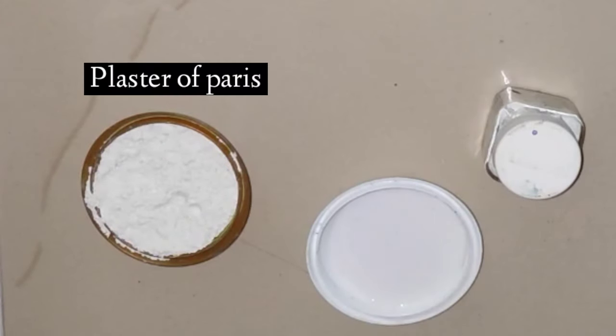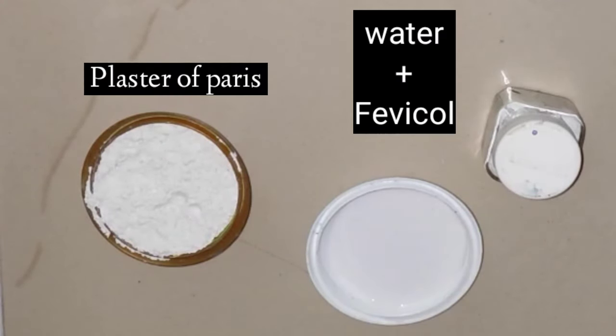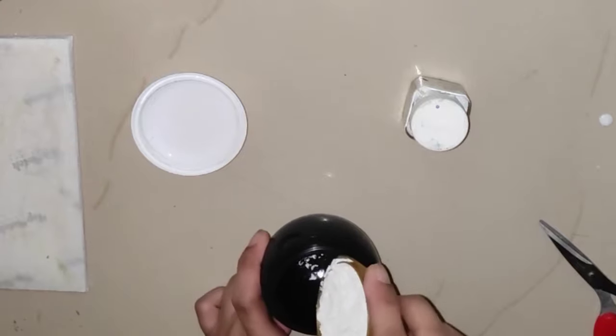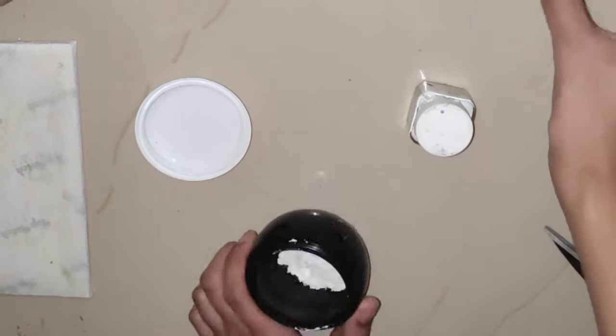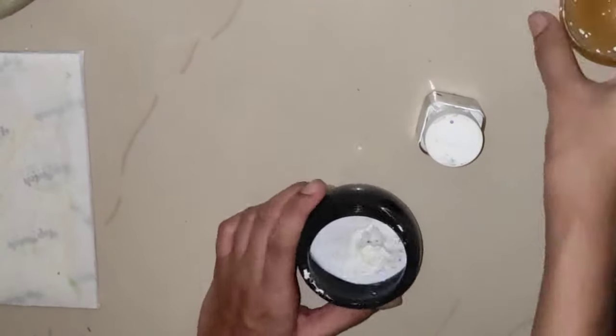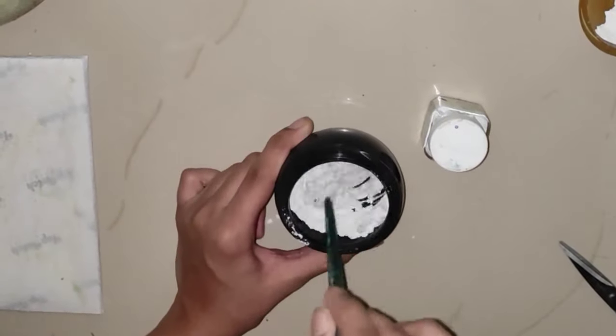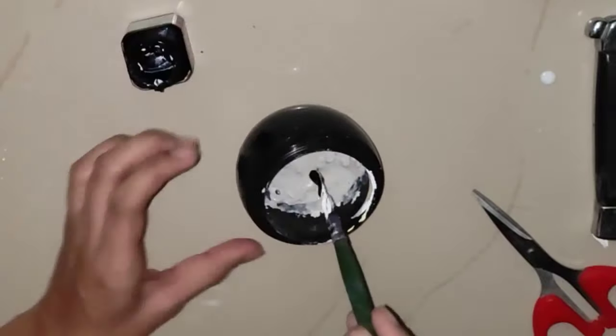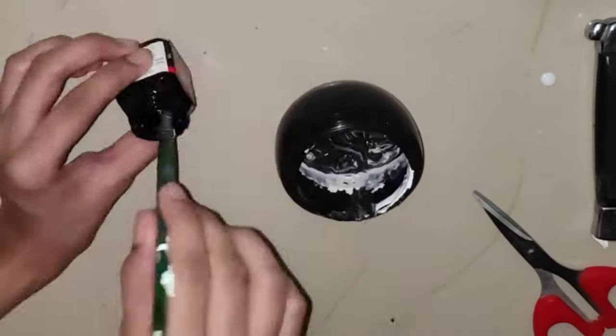After that, take some plaster of Paris and diluted Fevicol. Try to take equal amounts of plaster of Paris and diluted Fevicol. Mix both together. Now take a small amount of fabric color and mix them well until you get a satisfactory color.